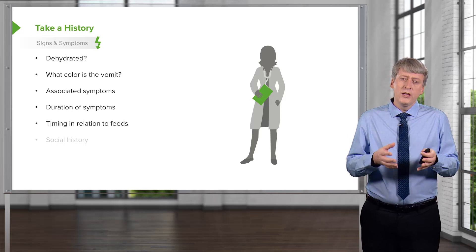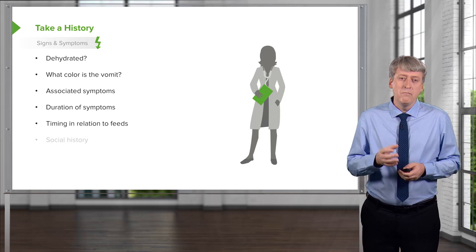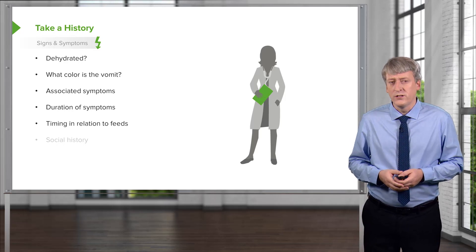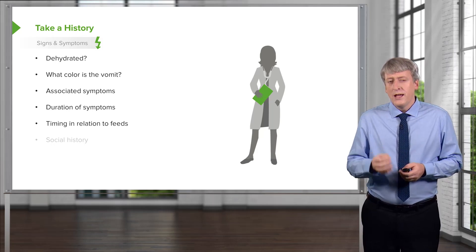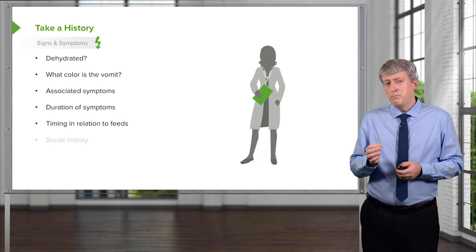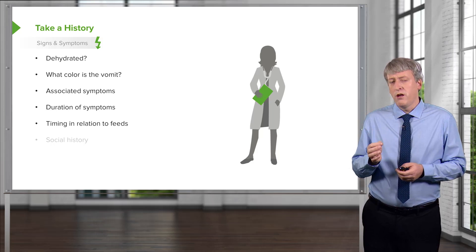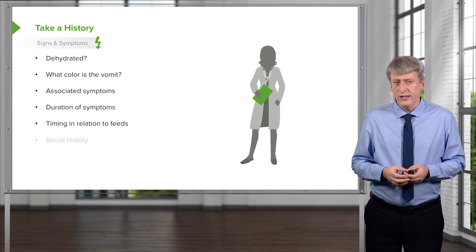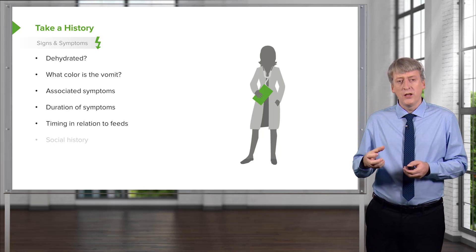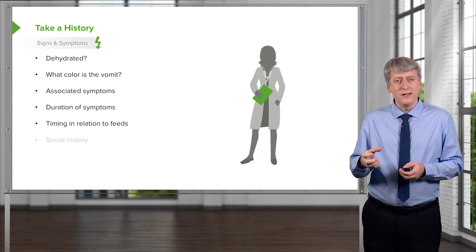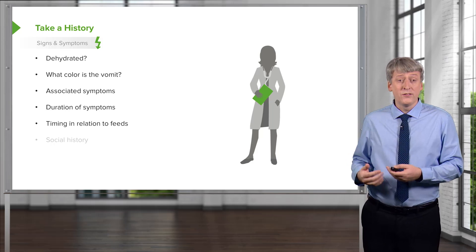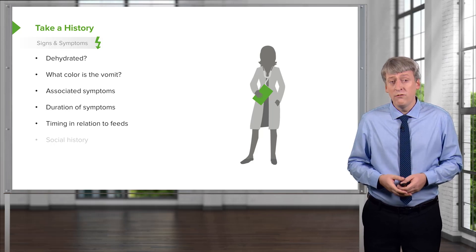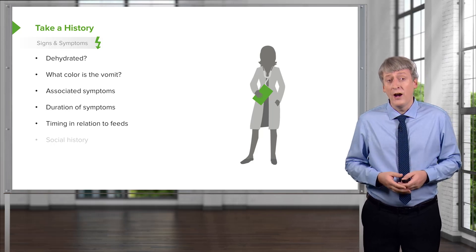Timing in relation to feeds is important because it may give you a clue as to what organ is involved. If a baby has a problem with their esophagus, they'll often spit up immediately after the feed. If the problem is in the stomach, there may be a slight delay. If the problem is in the pancreas, a patient may not feel pain for up to an hour after eating.